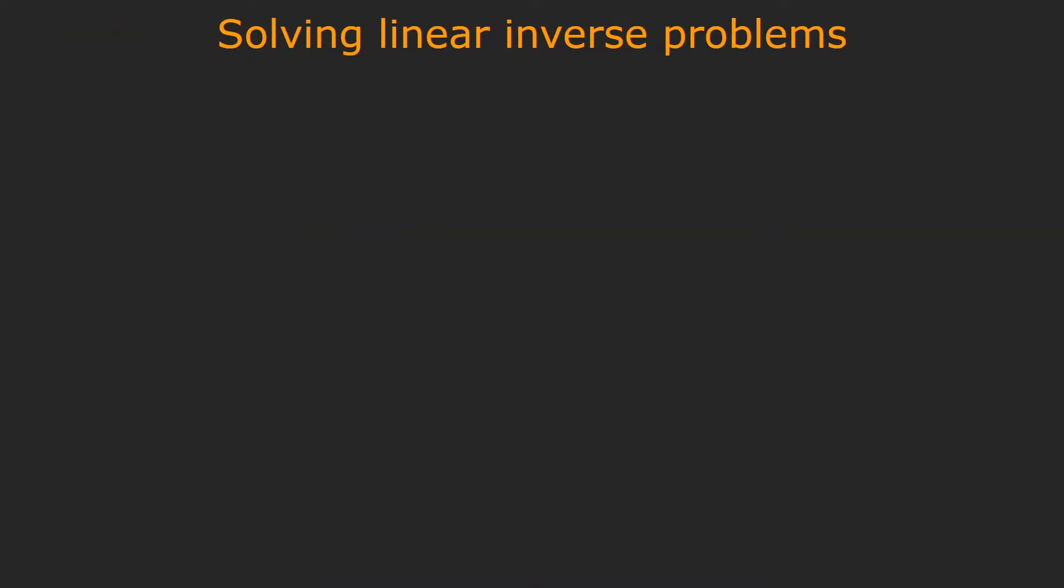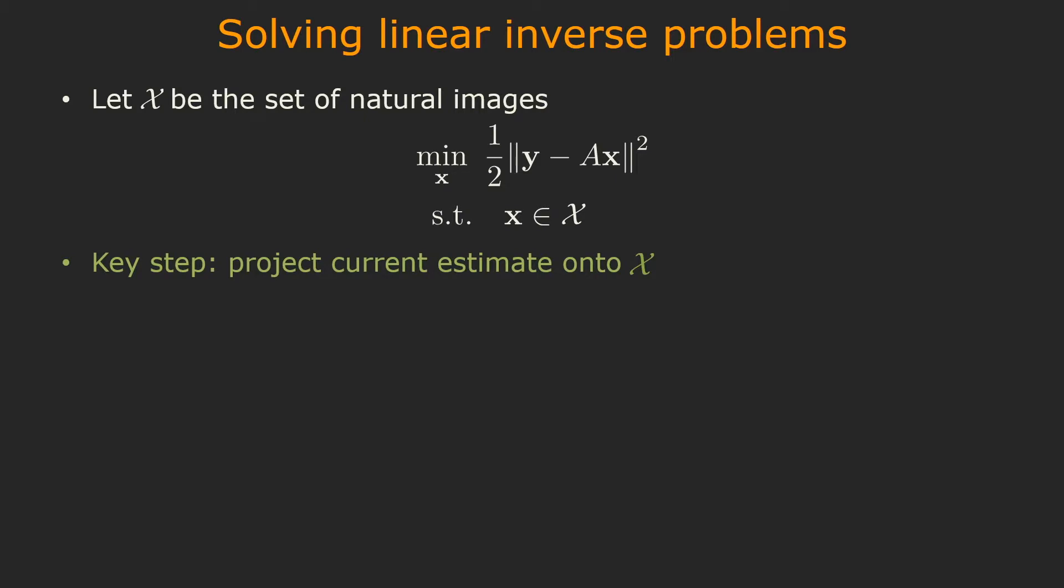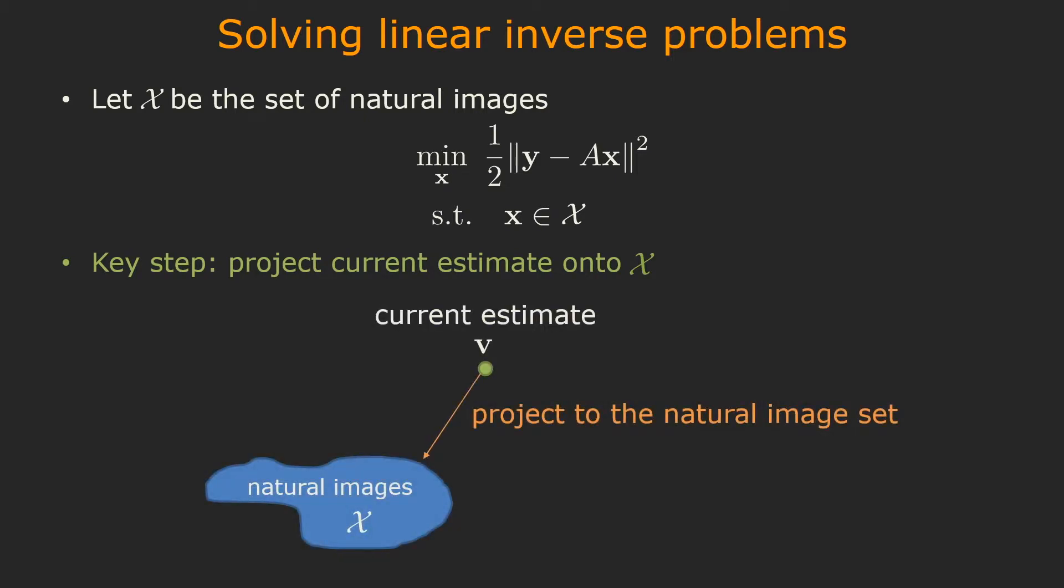We are motivated by the simple projected gradient descent algorithm. Suppose we define x as the set of all natural images. Linear inverse problems can be solved by minimizing the norm of y minus Ax, subject to the constraint that x is a natural image. A key step in the projected gradient descent algorithm is to project the current estimate onto the set x. Therefore, we propose to learn the projection operator P with a deep neural net. Note that the projection operator is independent of the specific problem we are solving.